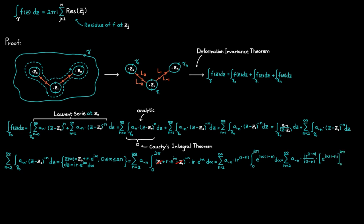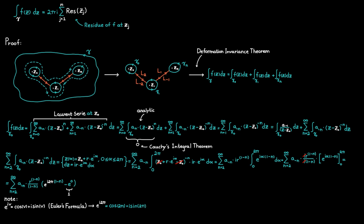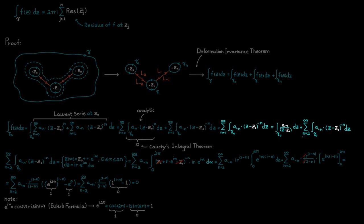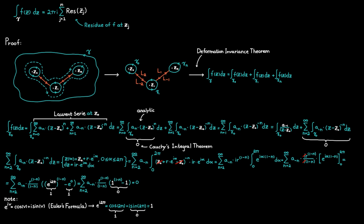We simplify by canceling out the two i's, then insert our start and end points. e raised to the power of zero is always equal to one. For the next step we use Euler's formula: inserting 2π as our angle gives us that e raised to the power of i times 2π is simply equal to one. Rewriting the first term, we see we have e^(i·2π), which is one raised to some power — and one raised to any power is simply one — meaning the whole integral equals zero.